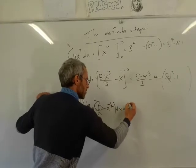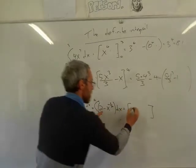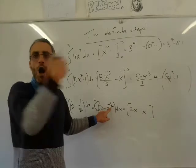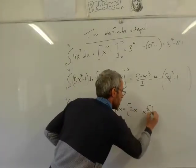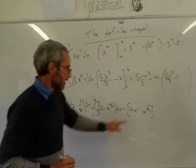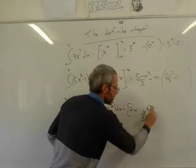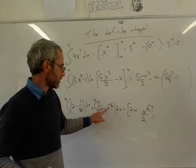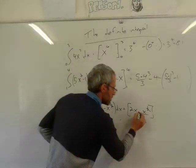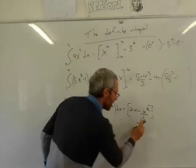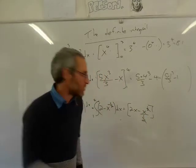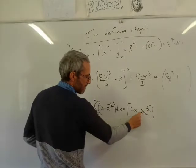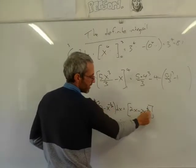So the integral from 1 to 4 of (2 − x^(−1/2)) dx equals 2x. For x^(−1/2): the power becomes one-half (adding 1 to −1/2), so x to the power of 1/2. Then I divide by 1/2, which is the same as multiplying by 2, giving minus 2x^(1/2). I then substitute 1 and 4.